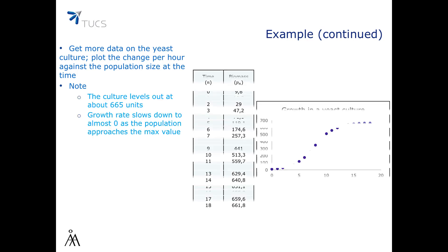So we note that the size of the culture levels out eventually at about 665 units. Moreover, the growth rate slows down to almost 0 as we approach this maximum value, as we can see from the flat shape of the plot close to the maximum value.